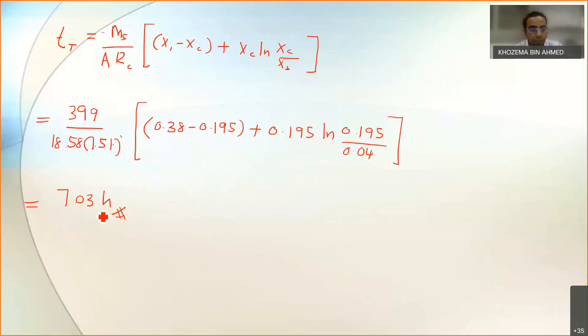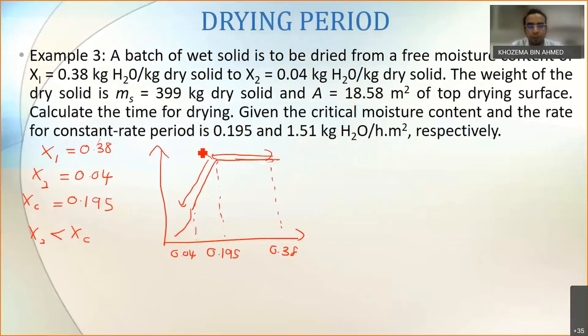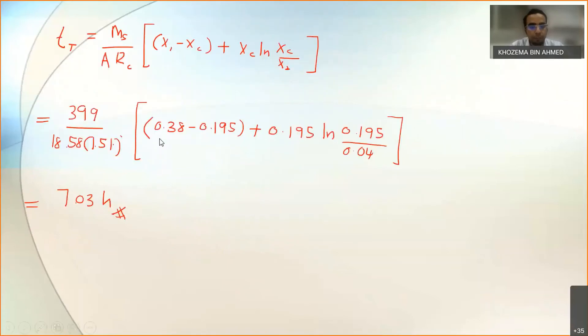So how did I get the unit of hours here? Please make sure that you know how to properly do unit cancellation. The m here will have a unit of kg, A here will have the unit of area. Your rate, if you look at the rate value, you have the unit of kg H2O per hour meter squared. So the hour that I got from was the 7.03 hour is actually coming from your rate.